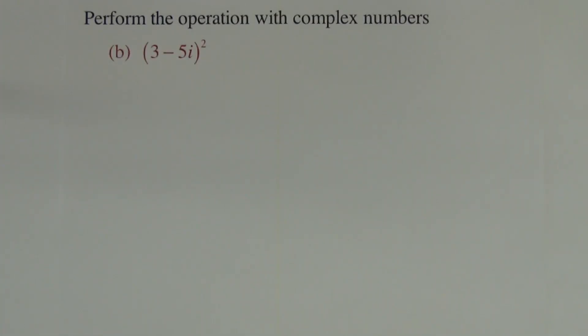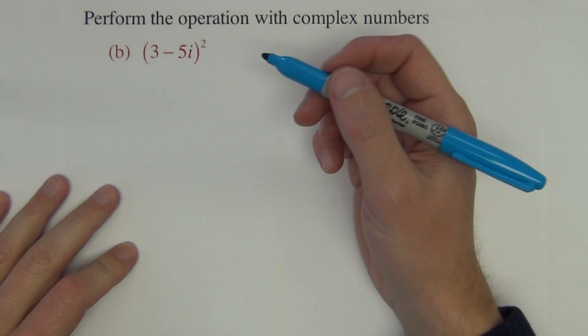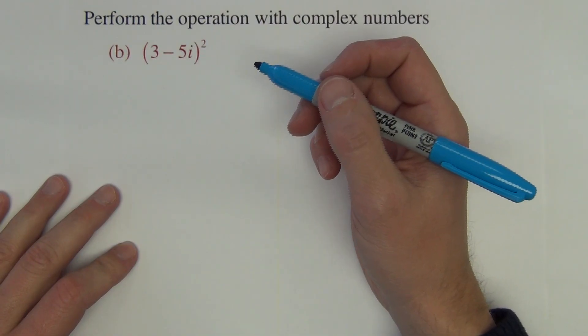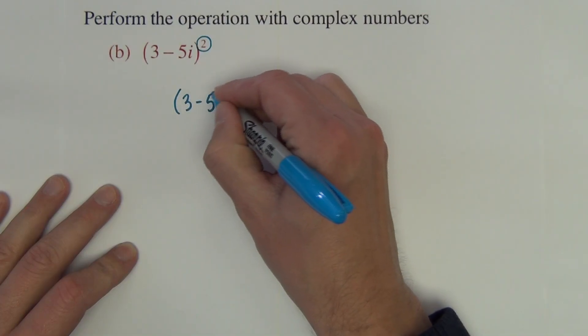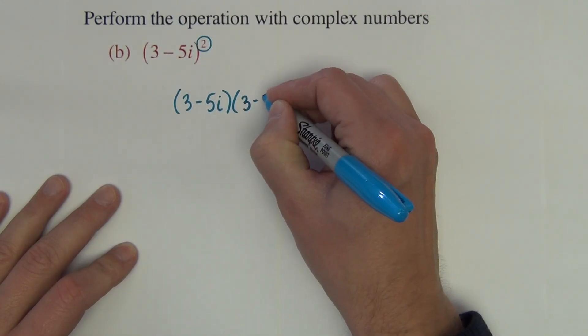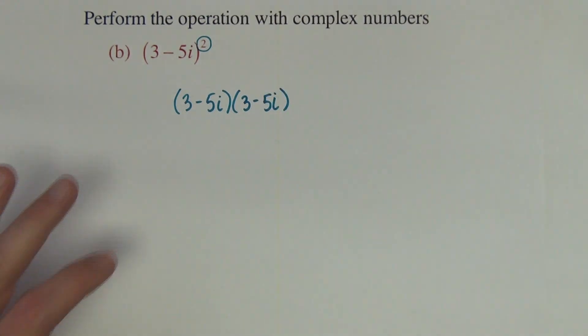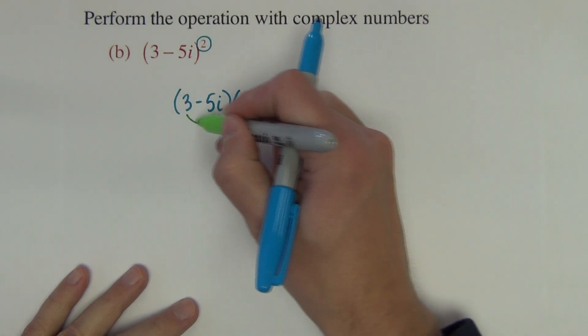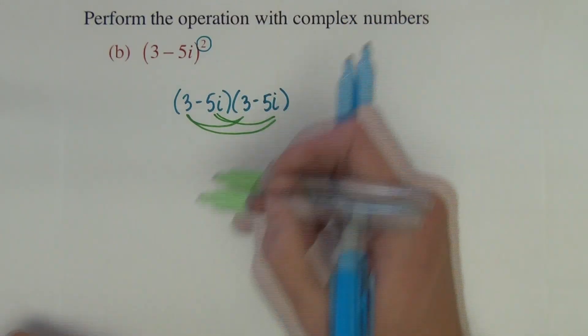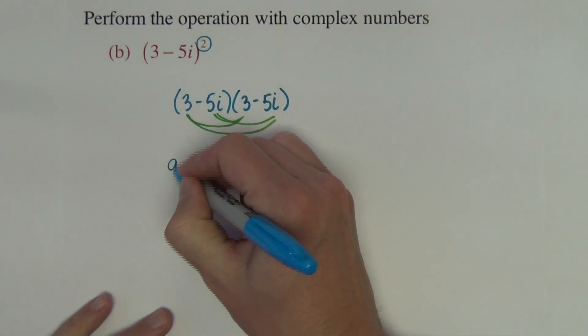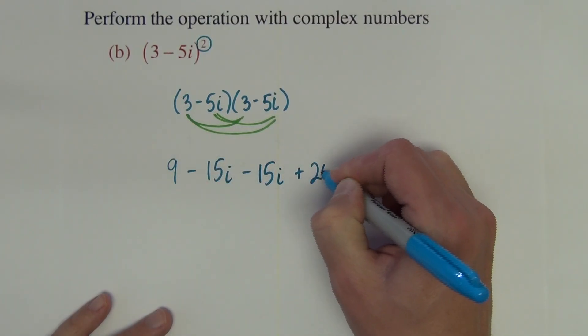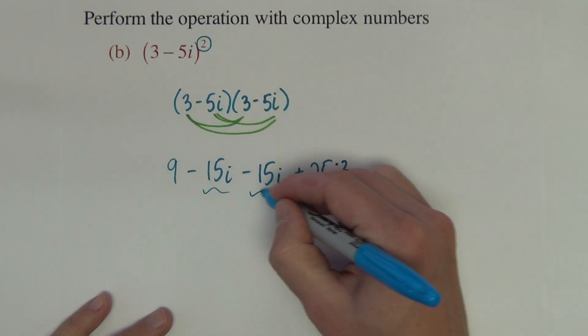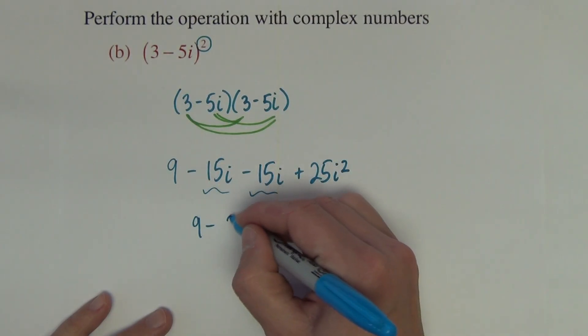The other way that the product might be presented might be like this as a binomial squared. So we're testing two things: can you work out the operation with complex numbers, and do you know what this square means on the binomial? It means that we're going to take that binomial 3 minus 5i multiplied by itself. So we're going to foil. We get 9 minus 15i minus another 15i plus 25i squared. Like terms give us 9 minus 30i plus 25i squared. Replace i squared with negative 1, we get 9 minus 30i minus 25, which equals negative 16 minus 30i.